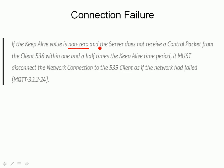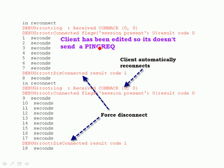We can see that here. I've modified the client, hacked into the code, and basically stopped it sending a ping request. I've also shortened the Keep Alive period. You can see we've connected to the broker, and after a period of time we get a force disconnect coming from the broker. Because I'm running a loop the client will reconnect, and again we see a connection acknowledgement — then after another period of time we get force disconnected again. You can't see any ping requests or ping responses because I've suppressed them from the client, but you can see what happens when you don't get them: the broker disconnects you.